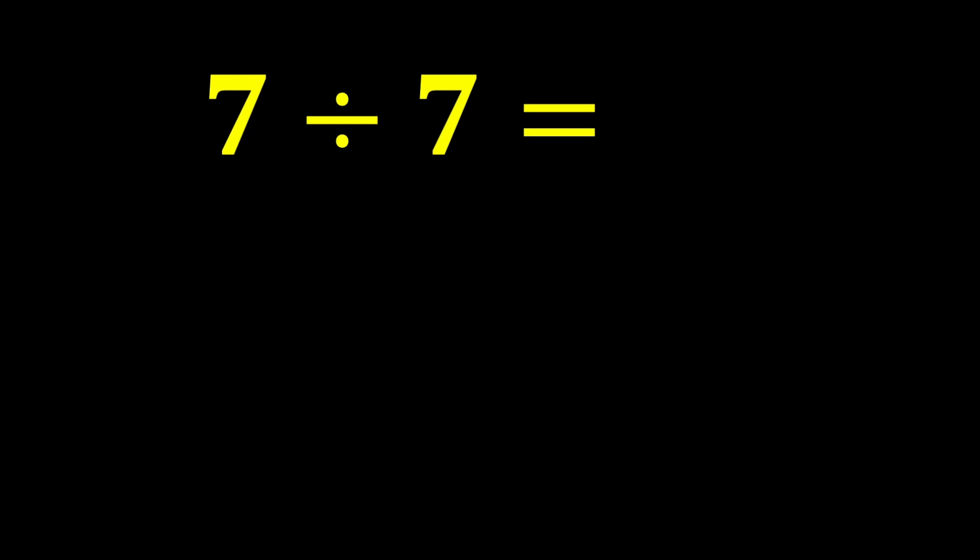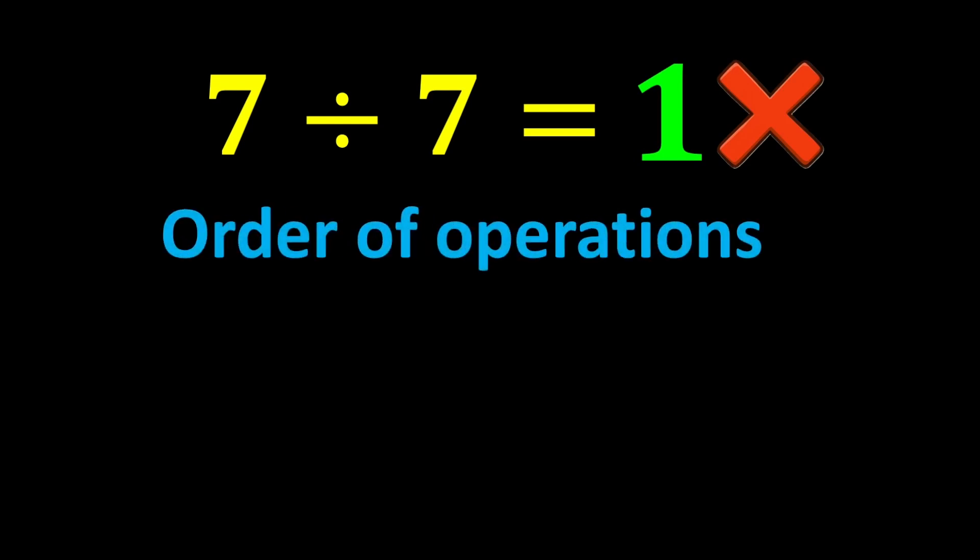Finally, 7 divided by 7 gives us 1. But this answer is not correct because we did not follow one of the most important rules in mathematics called the order of operations.